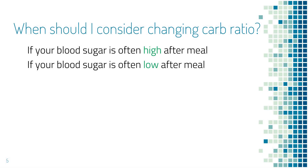You should consider changing carb ratio when your blood sugar is always higher after a meal than right before the meal, because that means you took too little insulin. Or if your blood sugar is always lower after a meal than right before, because that means you took too much insulin for the meal.